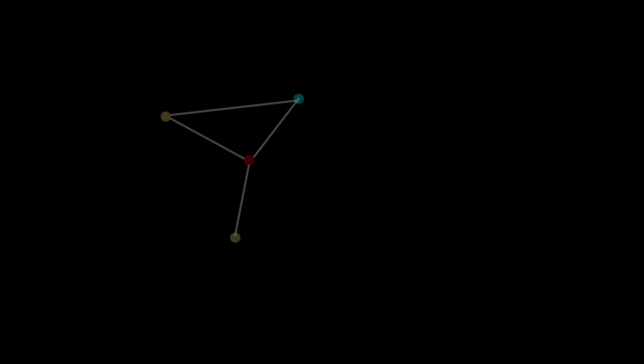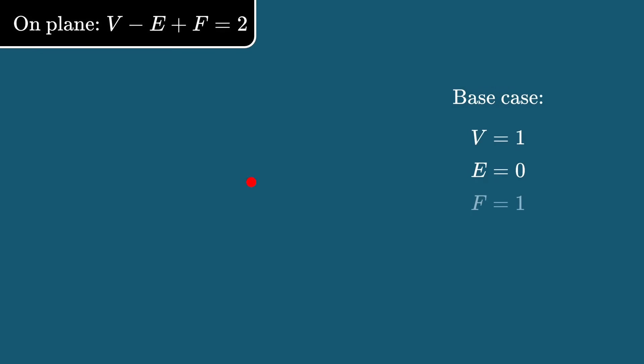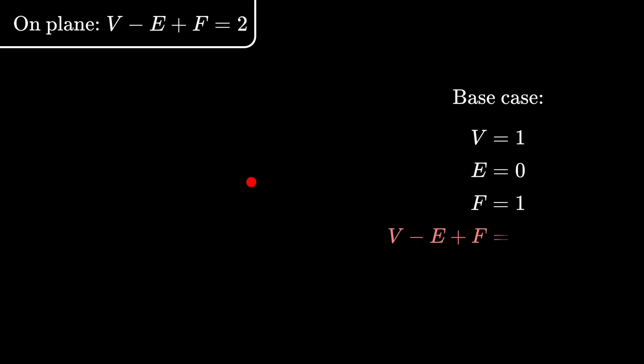Let's start with the plane, because I did know how to prove V minus E plus F equals 2 in this case. The usual way is to start with just one vertex, the base case. In this case, there is just one vertex, so V is 1. There are no edges, so E is 0. The whole plane is a connected region itself, so F is 1. So in the base case, V minus E plus F equals 2.